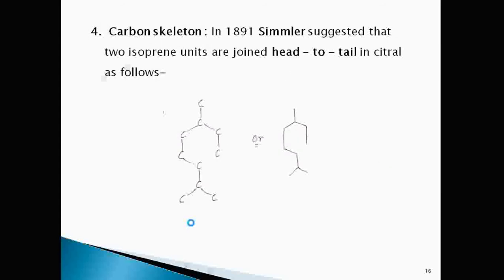In 1891, Semmler suggested citral having two isoprene units. The isoprene units are joined head to tail in citral. This carbon skeleton according to Semmler is given here. If we know the position of double bonds and where the carbonyl group is present, the structure of citral will be completed.